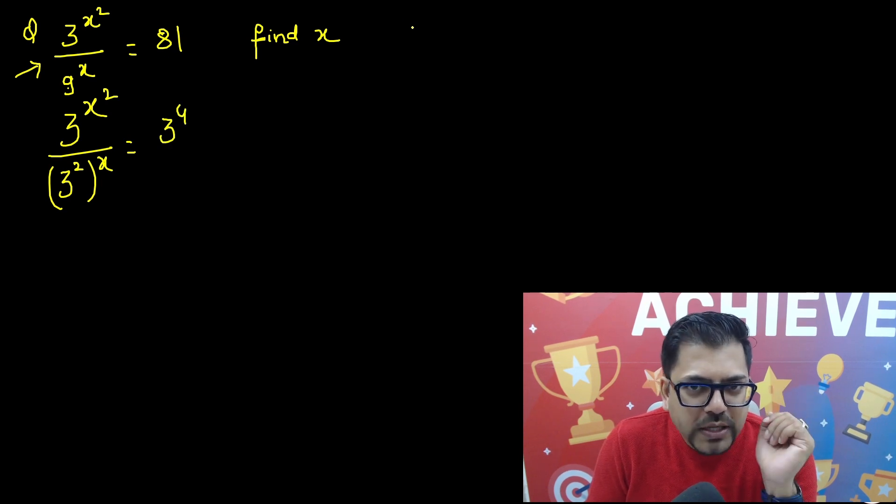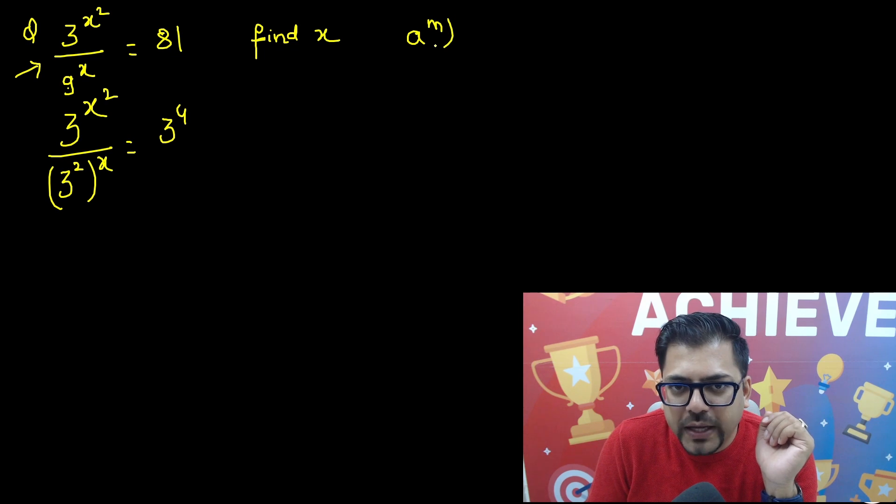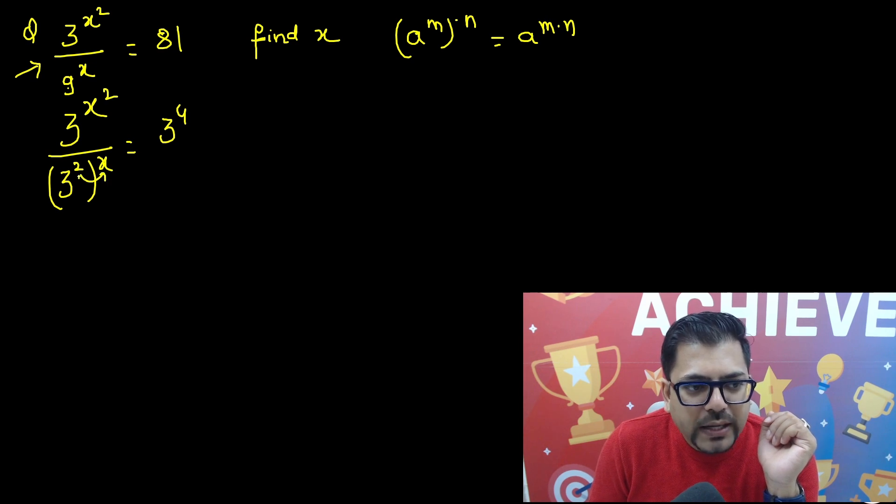Okay, so now we can apply the formula a raised to power m whole raised to power n. That becomes a raised to power m into n. So you can multiply this 2 into x. This will become 3 raised to power x squared upon 3 raised to power 2x.